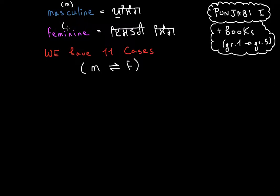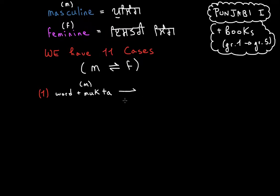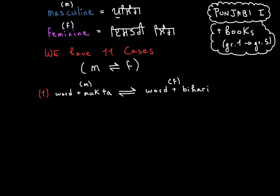The first case takes a word which has a mukta at the end — that is, no additional vowel symbol — making it male. It can become female by replacing the mukta with a bihari. Conversely, a word with a bihari can become male by replacing it with a mukta. For example, sajjan, which ends with a mukta, becomes sajjani when we add a bihari. This works both ways.